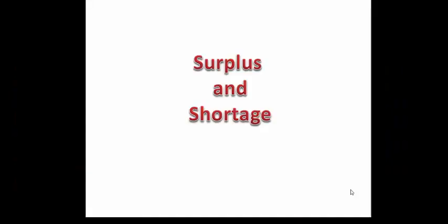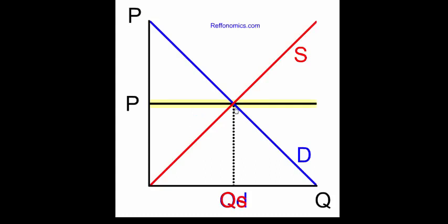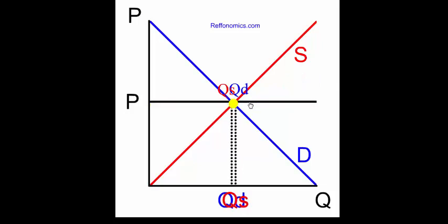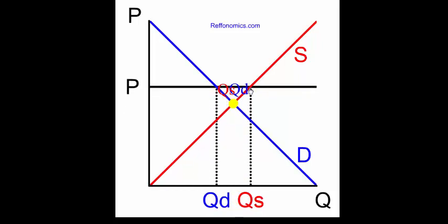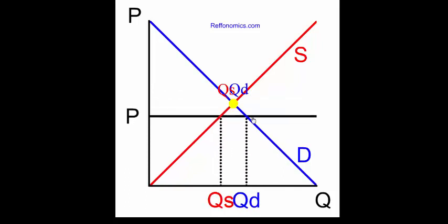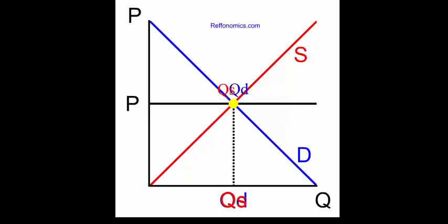Surplus and Shortage. Notice that at the equilibrium price, the quantity demanded is equal to the quantity supplied in a perfectly competitive market. If the price goes too high or too low, quantity demanded and quantity supplied do not equal. They are equal only at the equilibrium price.